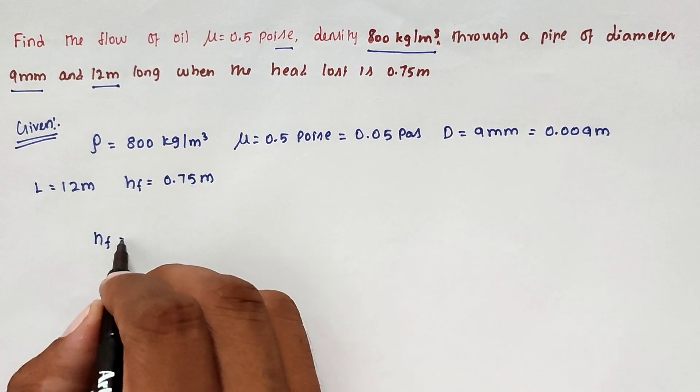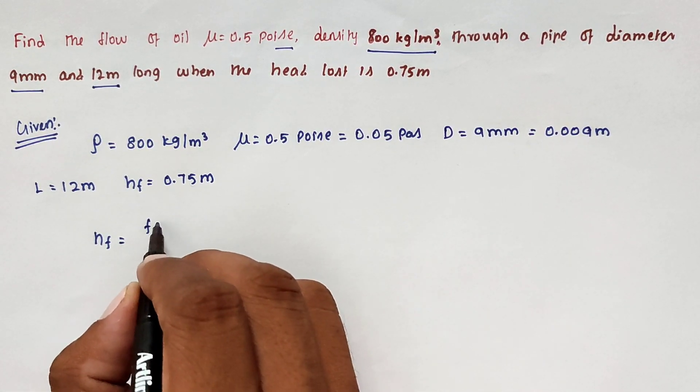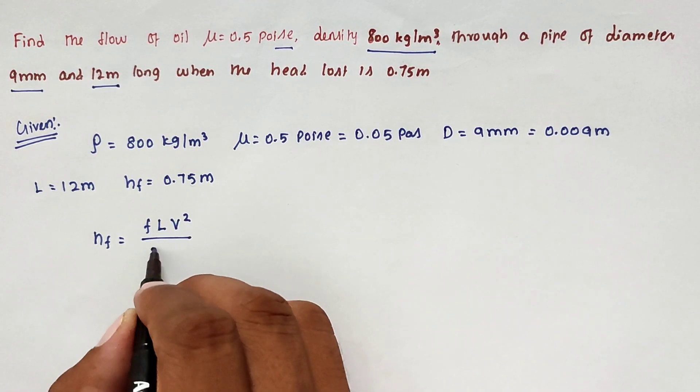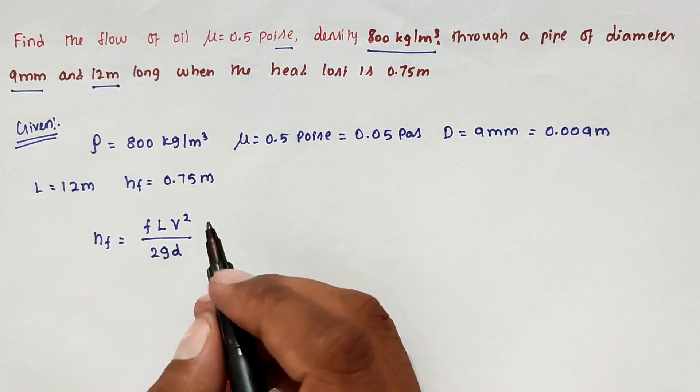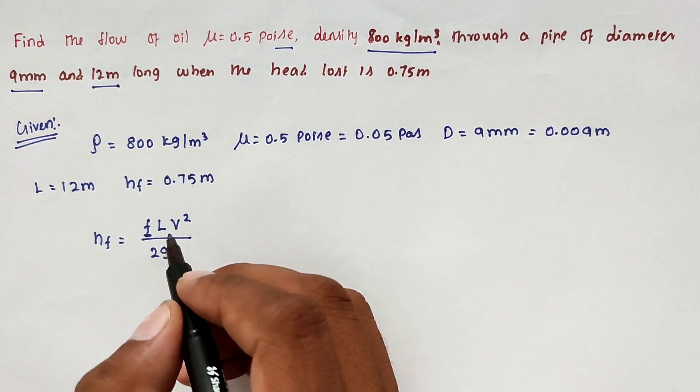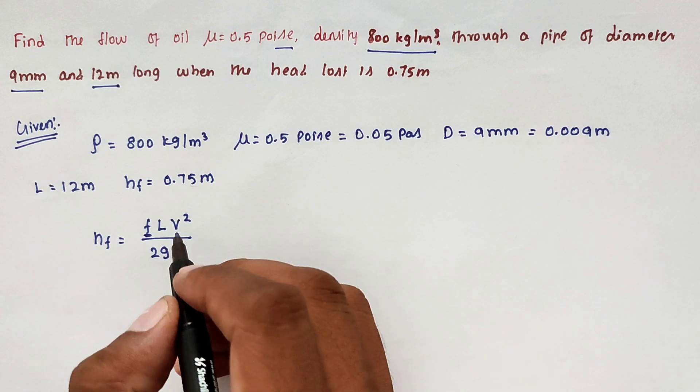Now the relationship Hf equal to f into L V square divided by 2 into g into D. From that we have to find out the f value. From that f value we can easily find out the V.